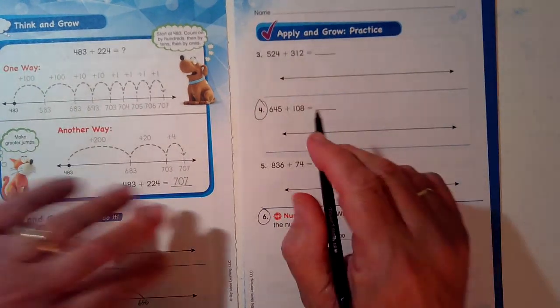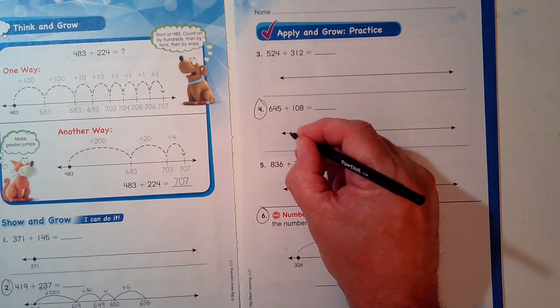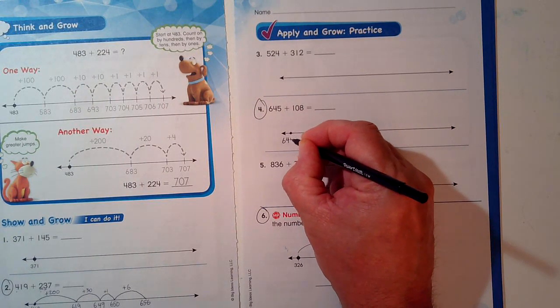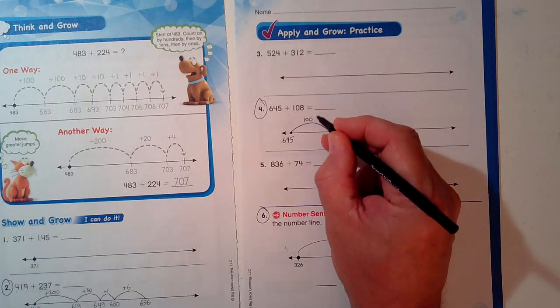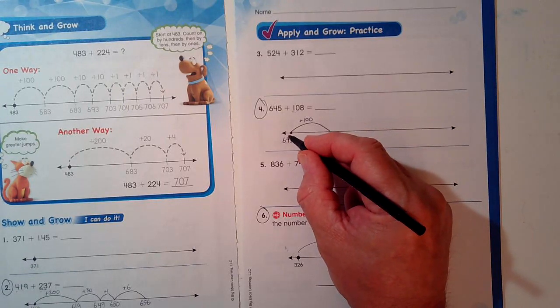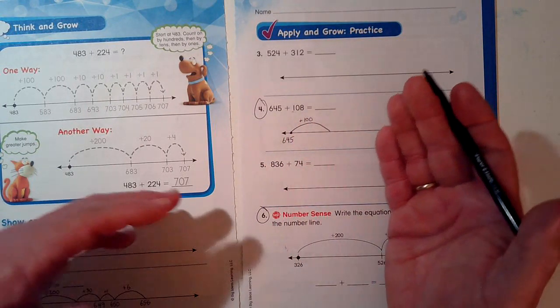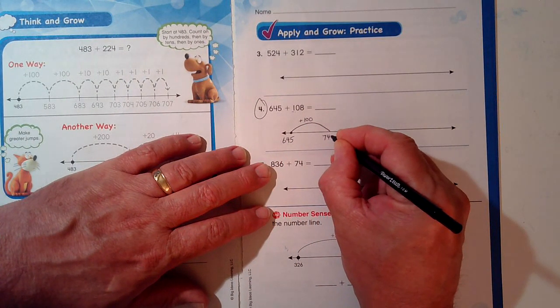Alright, let's do problem number four. Here we go. Open number line, 645 is where I start. I'm going to add 100. Plus 100. I'm sorry, 645 plus 108. That's our problem. So I'll add 100. That makes it 745.